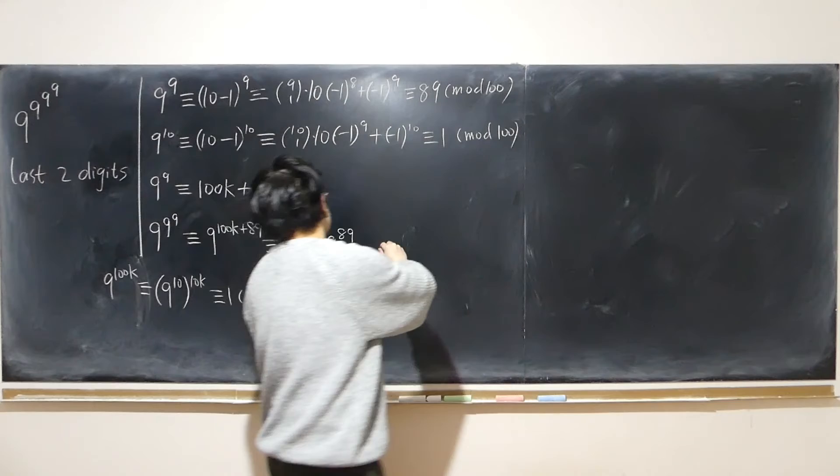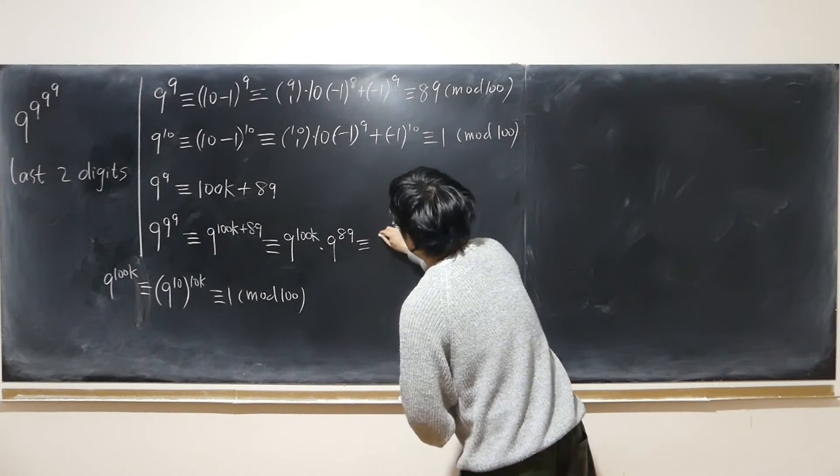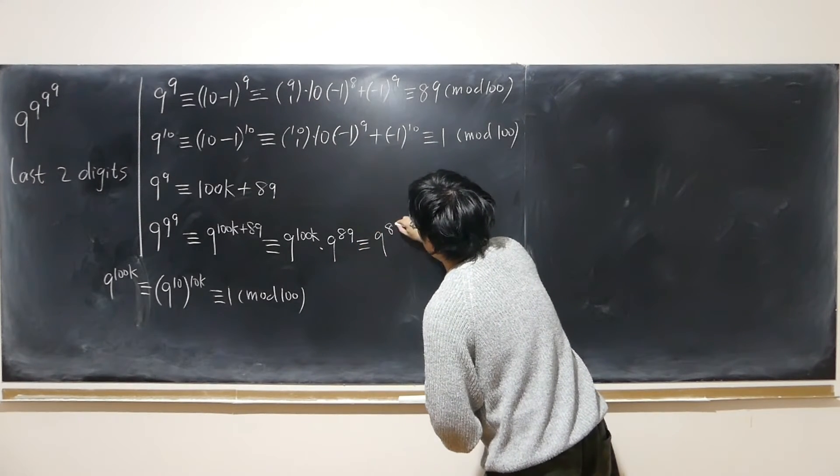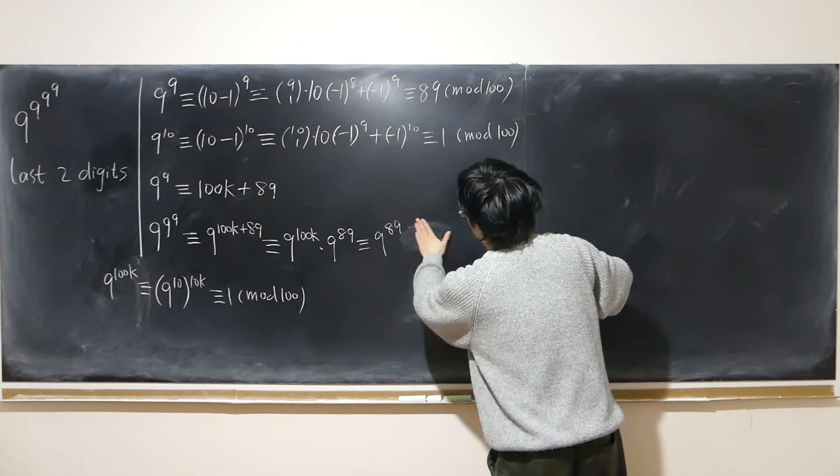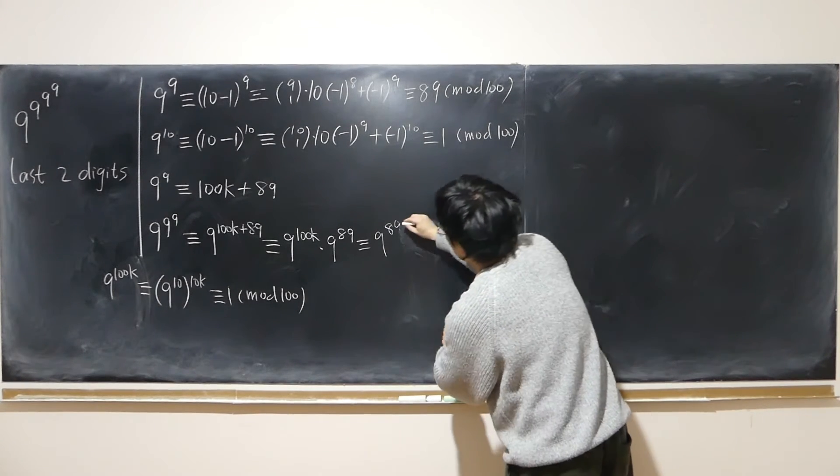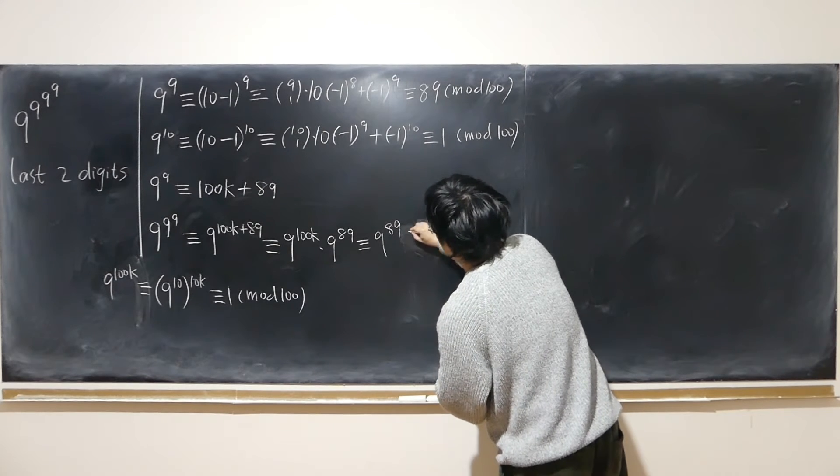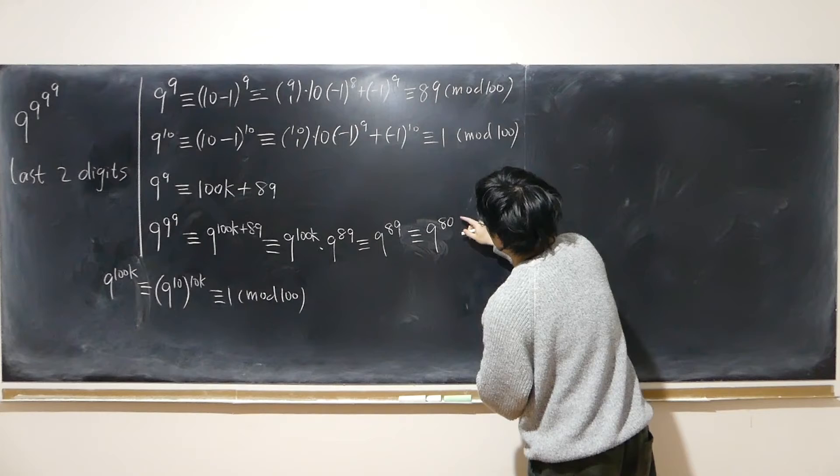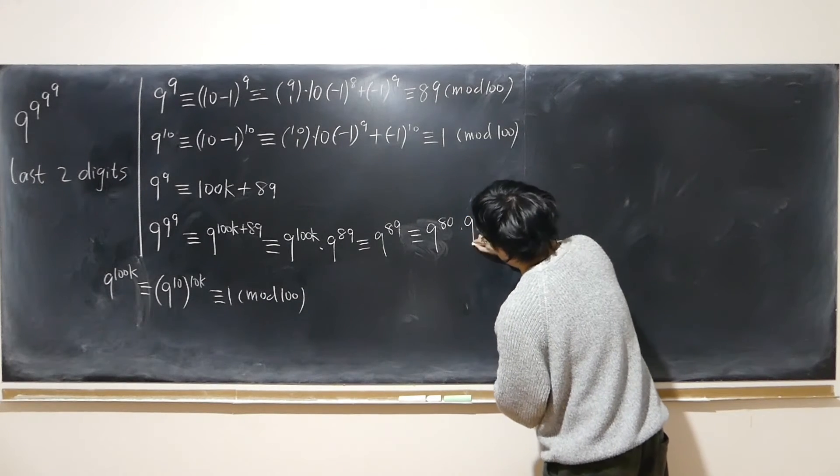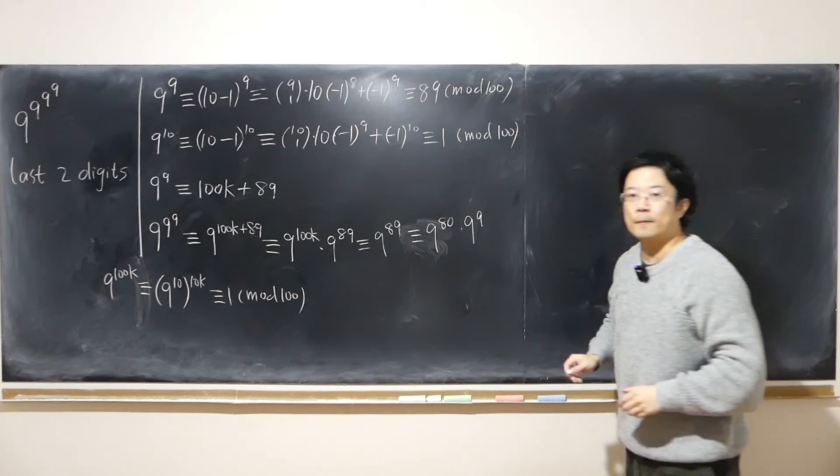So 9^(100k) essentially just replace this by 1. In fact, multiply both sides by this number, so essentially this is just obviously 9^89, mod 100.